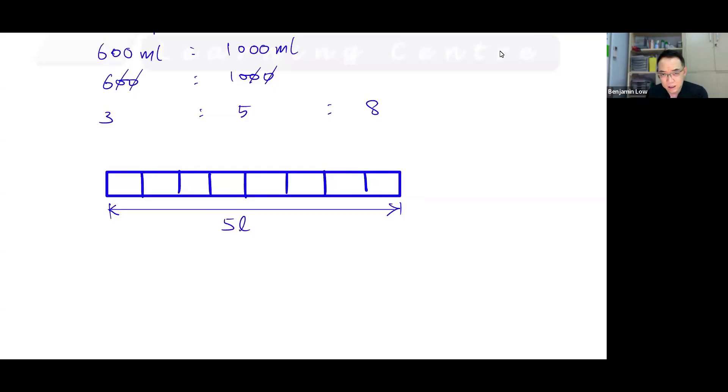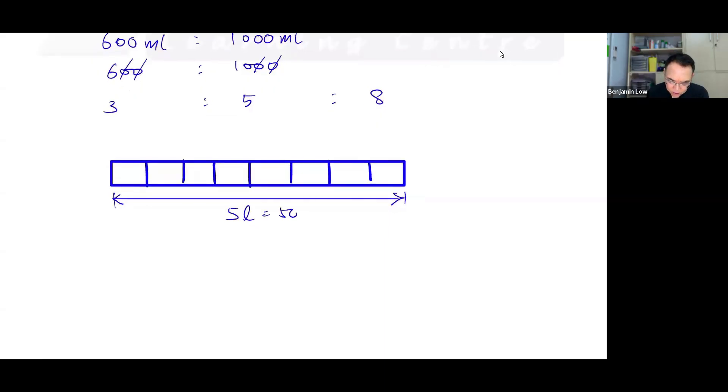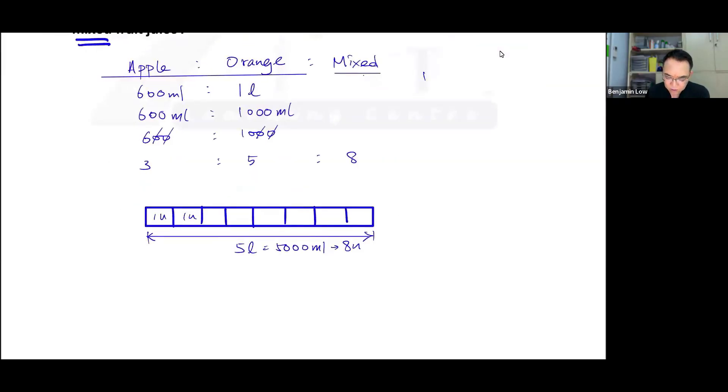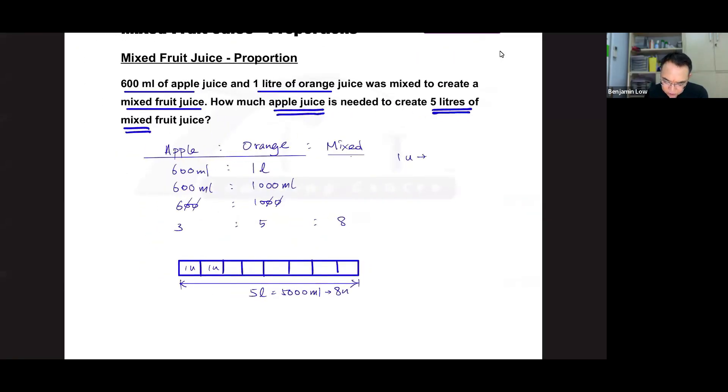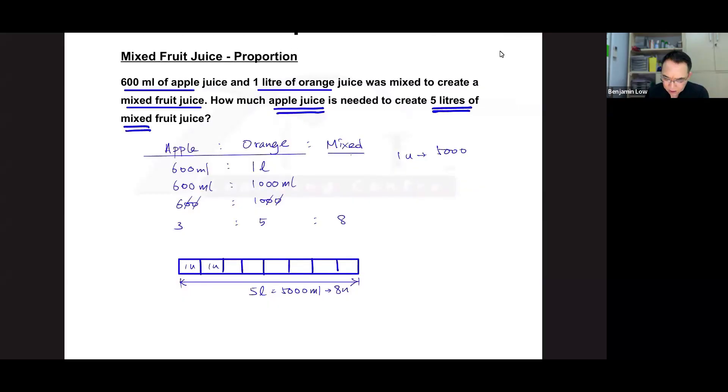Now, 5 liters is 5000 milliliters because 1 liter is 1000. We have 8 units, so if this is 8 units we can find 1 unit. To find 1 unit, all I got to do is take 5000 and divide this by 8. If I divide 5000 by 8, I should get 625. Let me double check. Yep, I get 625. So I get 625 milliliters, which is 1 unit.